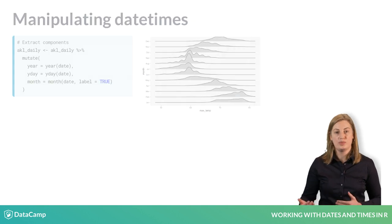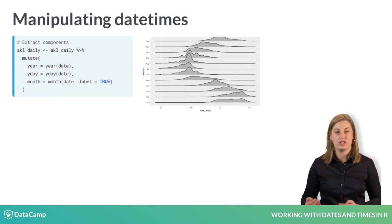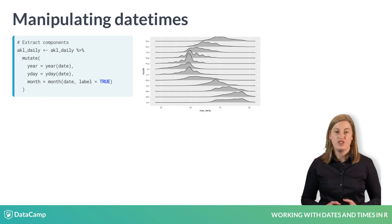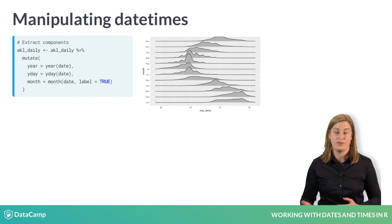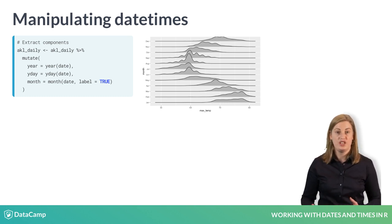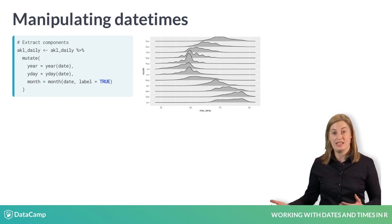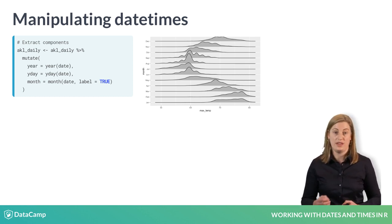Then you'll learn about Lubridate functions for extracting and manipulating components of a datetime. You'll be able to pull out the month, day of the week, or day of the year from a datetime. Combined with dplyr and ggplot, that will allow you to make plots like this joyplot of the maximum daily temperature by month in Auckland.